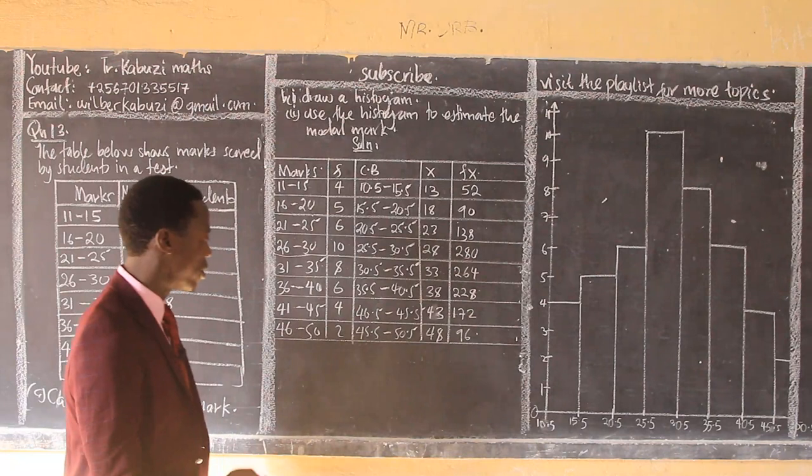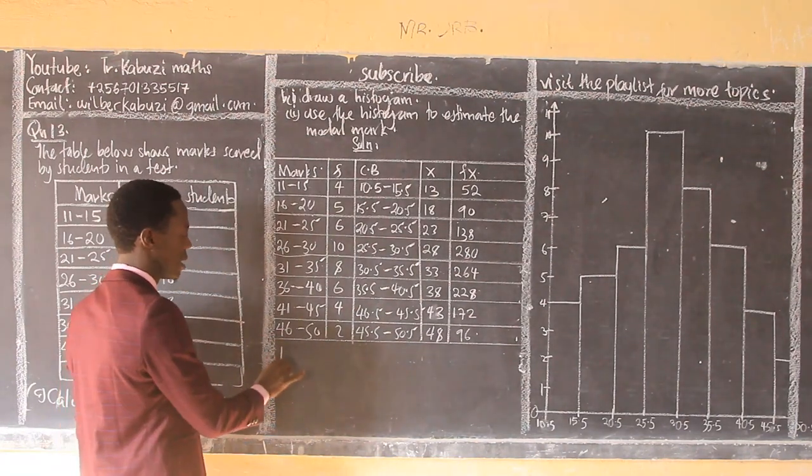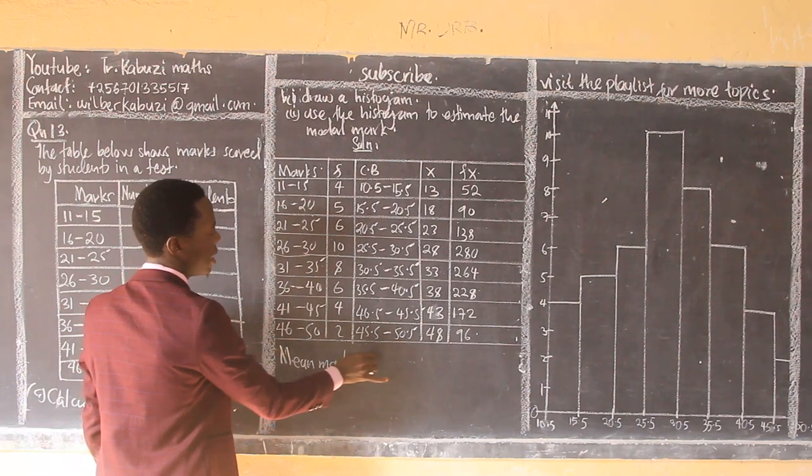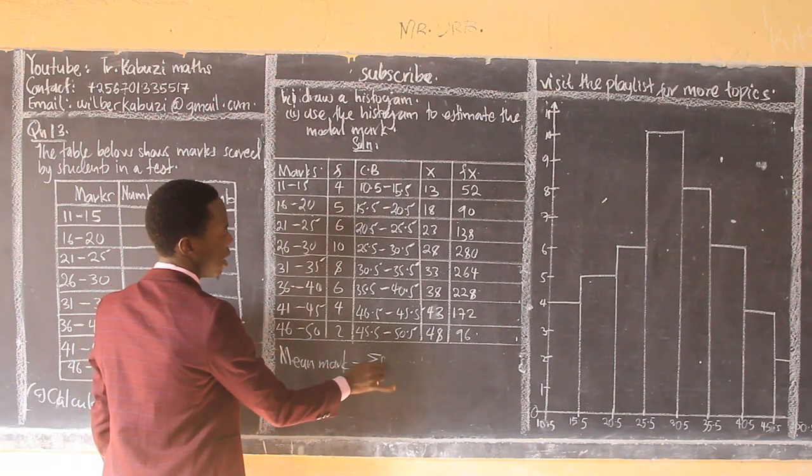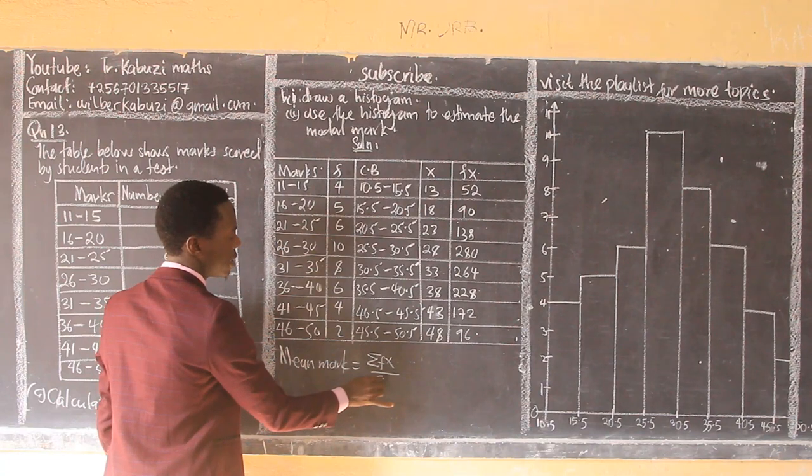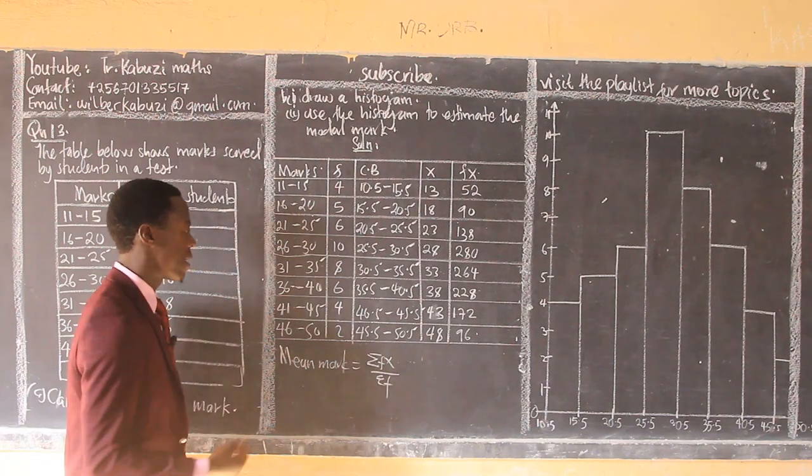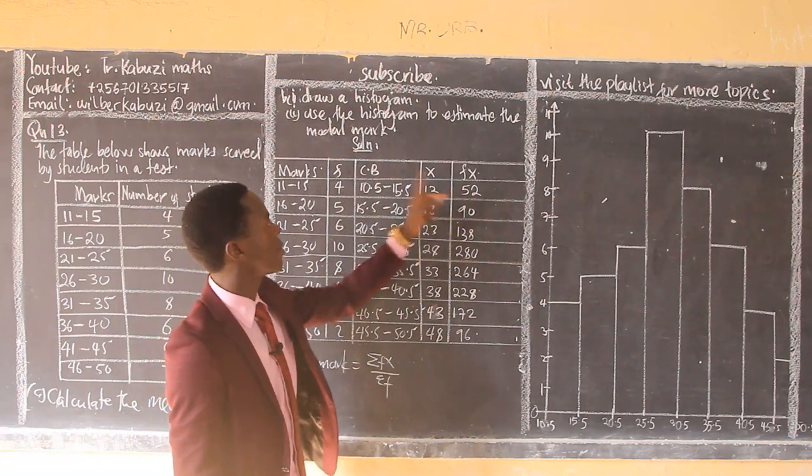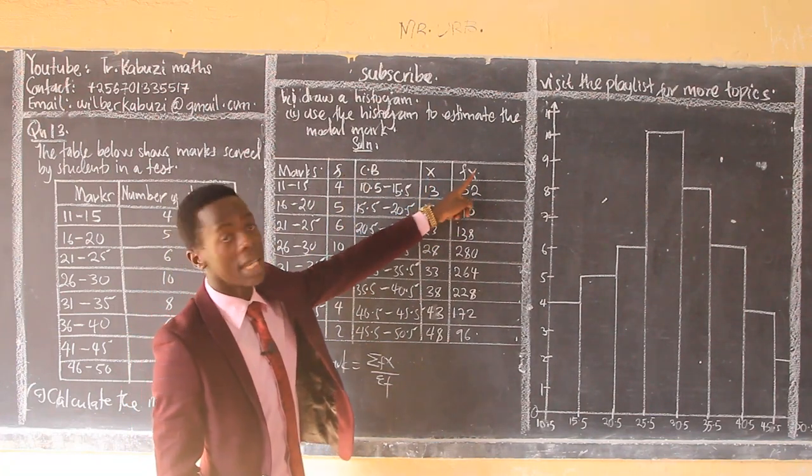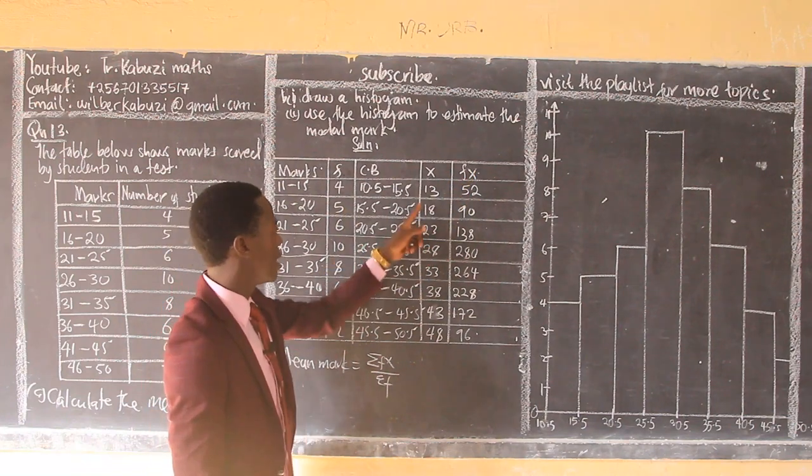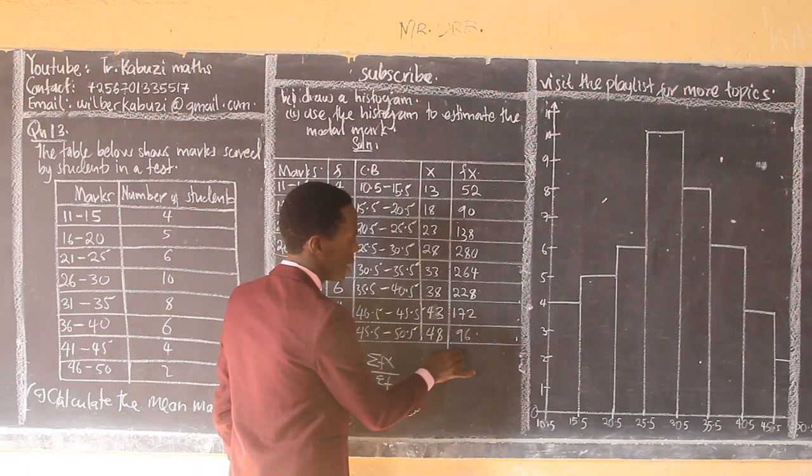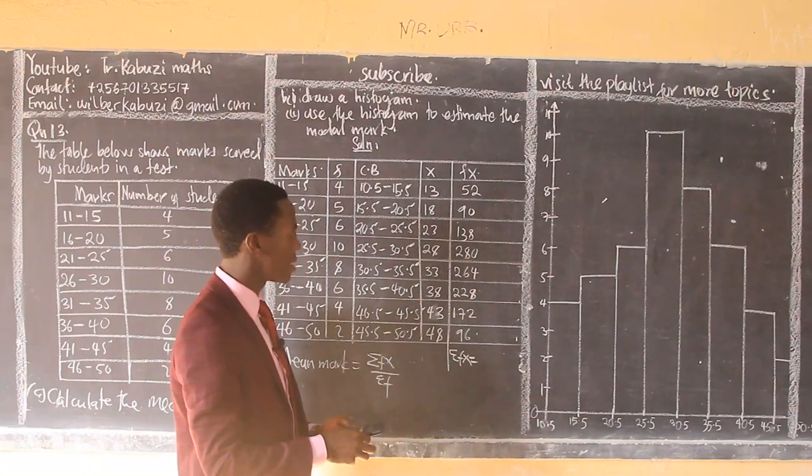When I come now to get my f×x, because what am I getting f×x? Because I know that my mean mark is going to be given by summation f×x over summation f. So that's why I am getting those ones now. So my f×x, I get this times this. You get the f times the x to get f×x. That's how we are getting that. Now what I am remaining with to get is the summation f×x when I sum all those figures there.